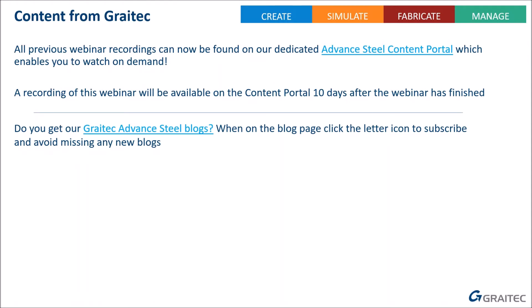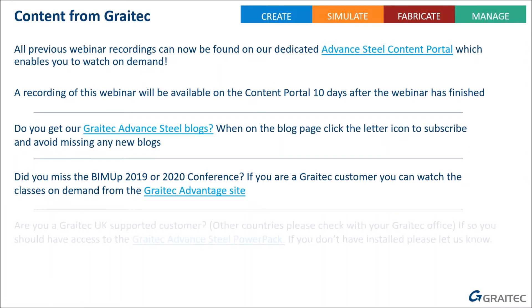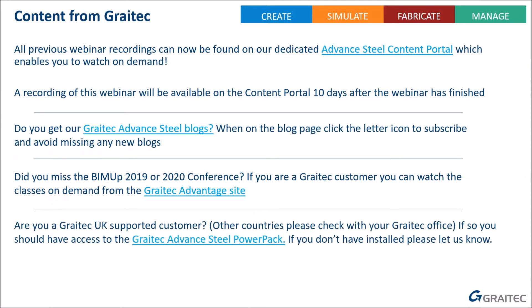We constantly put up hints, tips, and extra information on the Graytech UK blog page — subscribe to get notified of new postings. We recently had the BIM Up global conference at the start of June with over 200 presentations in nine languages covering the whole world, at least 28 of which were for Advanced Steel. If you're a Graytech customer, log into your Graytech Advantage site at graytech.com to watch those recordings. UK customers are also entitled to the Power Pack, which provides lots of useful productivity tools.